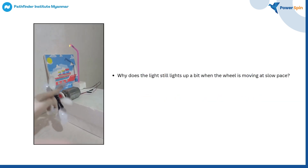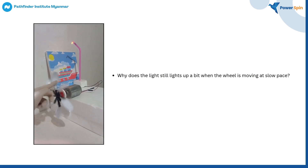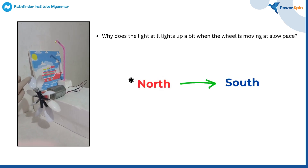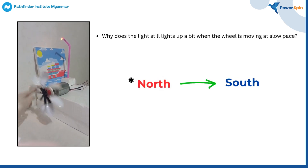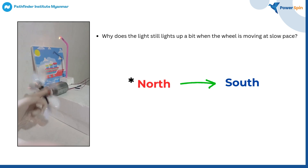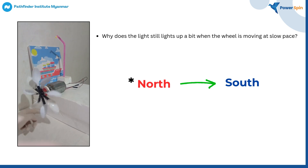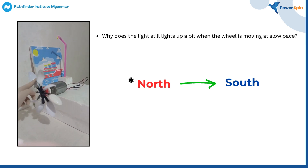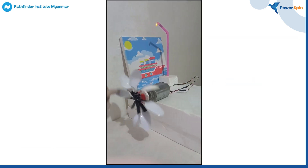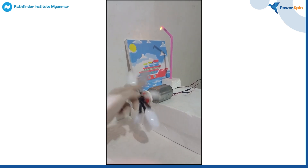But why does the light still light up a bit when the wheel is moving slowly? That's because the rotor is still rotating in the same correct direction. Since it's the correct direction, no matter how much speed the rotor blades are at, the light will still light up. But the lighting will depend on the speed the rotor is moving. It will be clearer if you rewatch this video, especially the end part.